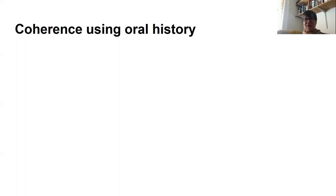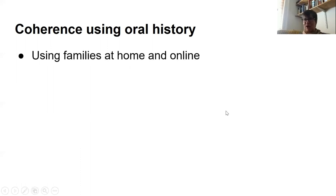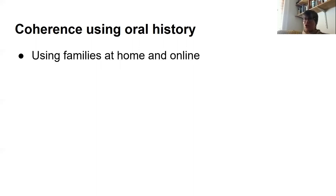Of course, people are very much thrown together with their families at the moment, or connecting with them online quite a lot. Possibly conversations may be getting a little stale because nobody's doing anything. So here's a way of perhaps livening them up. Step one is to ask students to identify a family member and to talk to them generally about where they lived, what their work was in the second half of the 20th century - something connected to the period you're working on. It might be the 50s or the 60s.